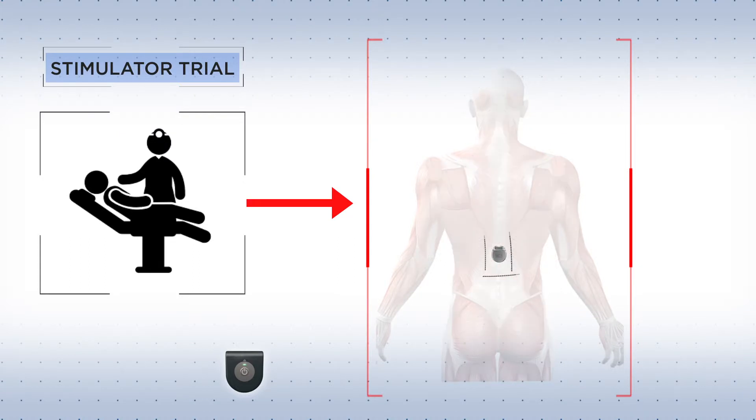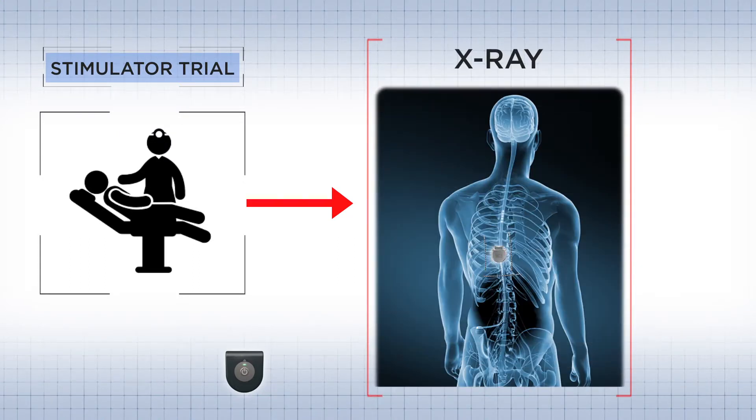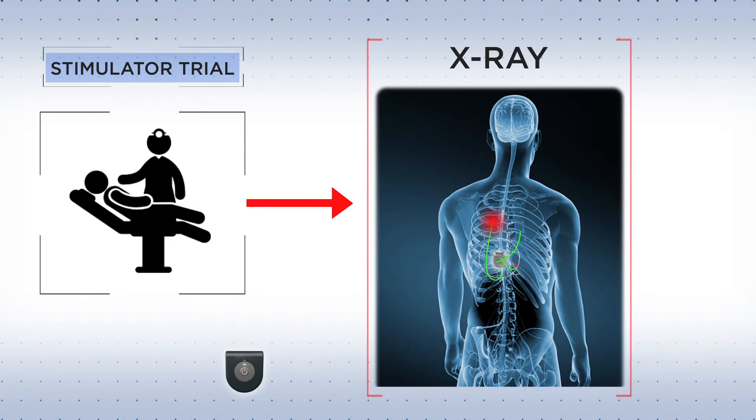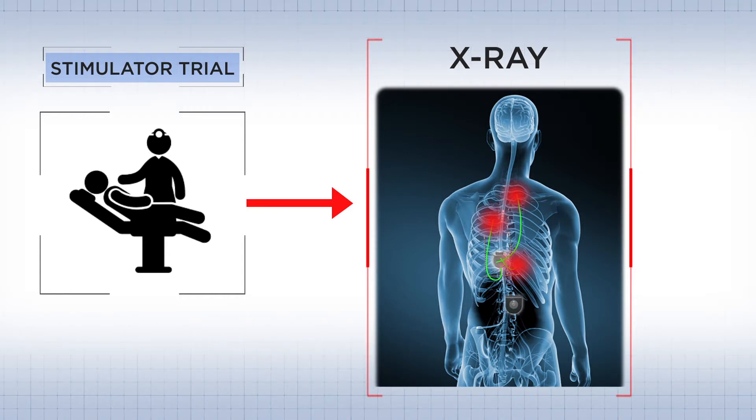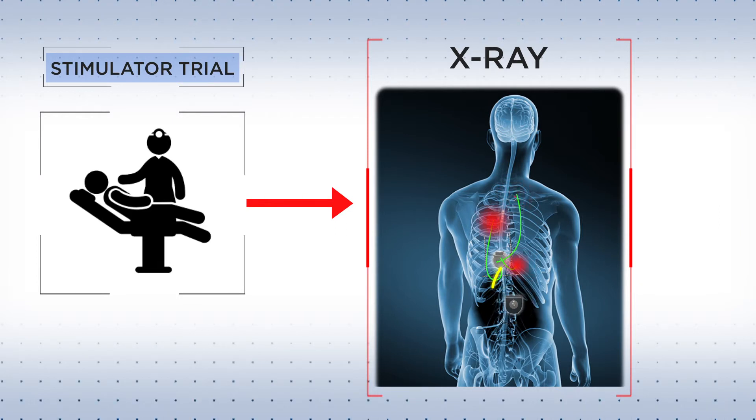For the actual procedure, the doctor uses skill and x-ray guidance to position a lead wire at the pain source. The lead is threaded down the spine in the epidural space outside the spinal cord. A pulse generator is placed under the skin in the lower back. An extension wire connects the two.